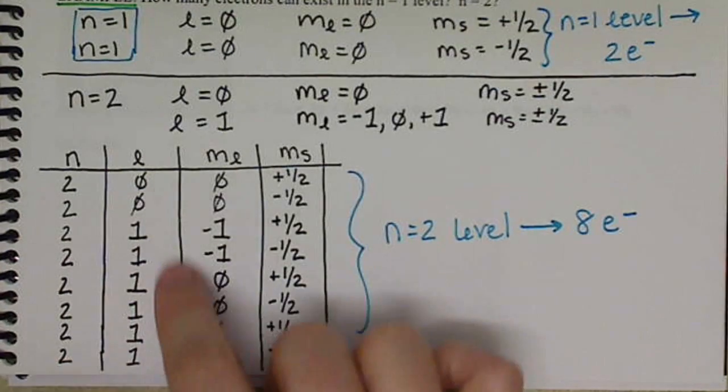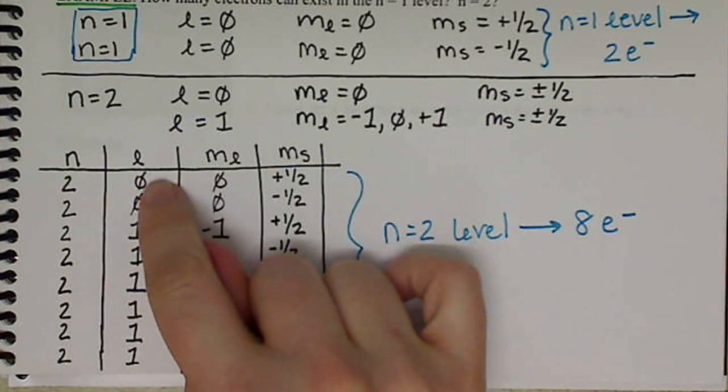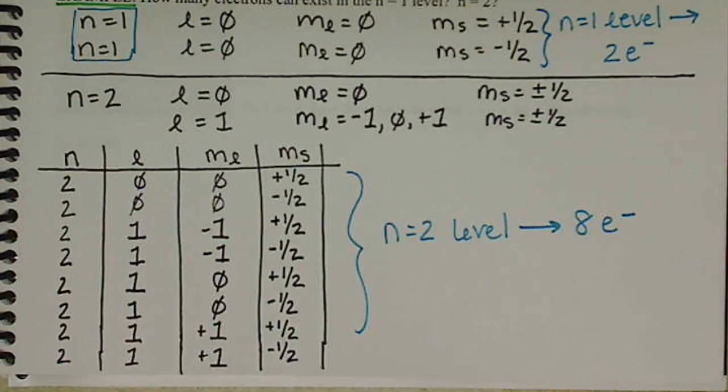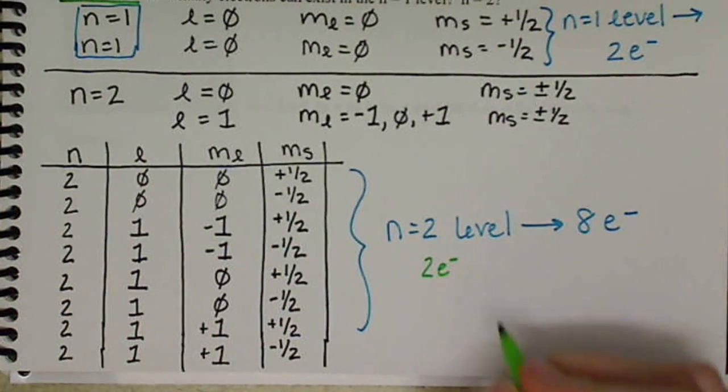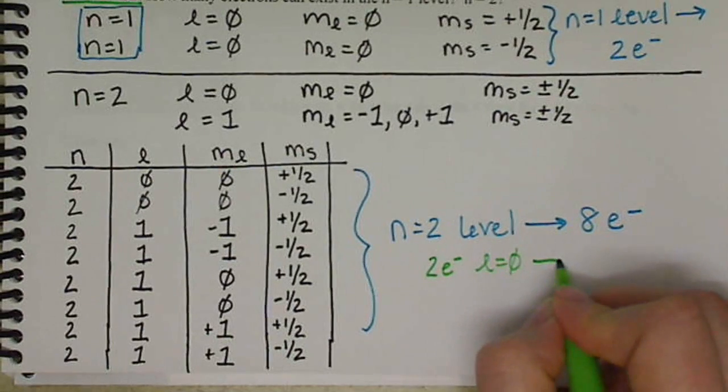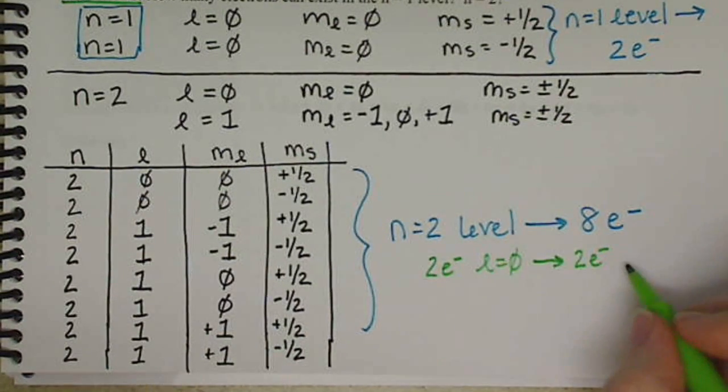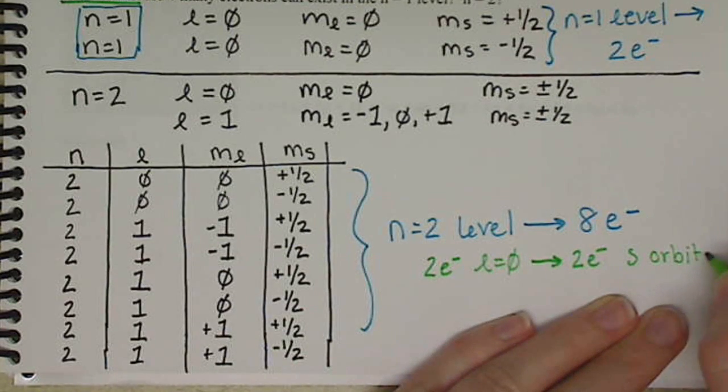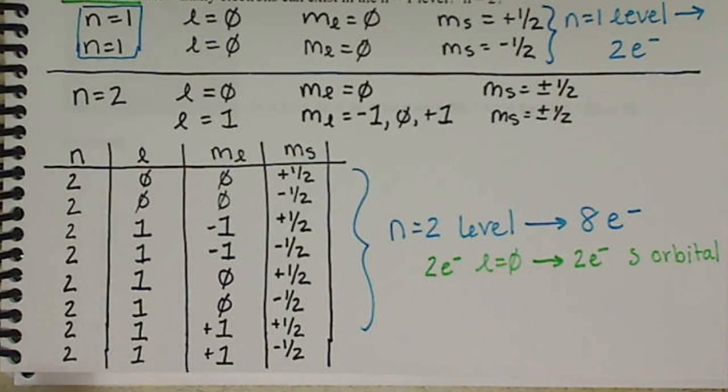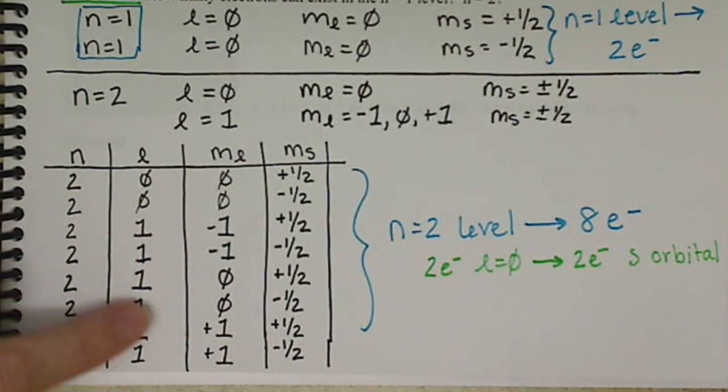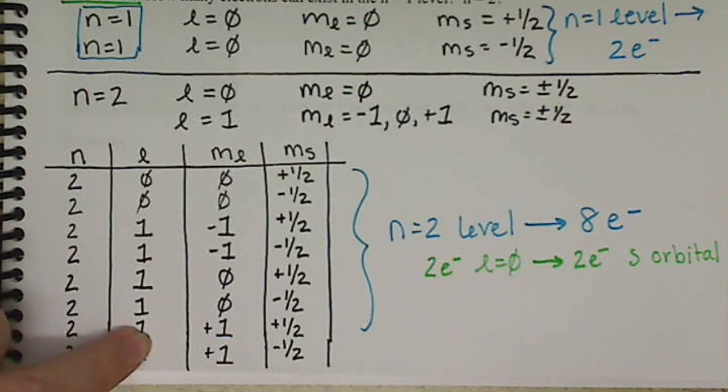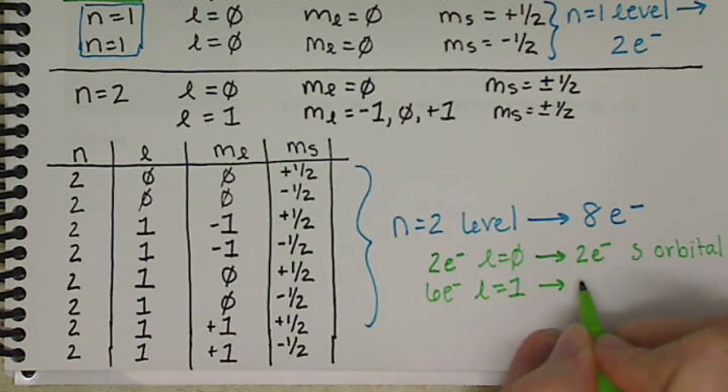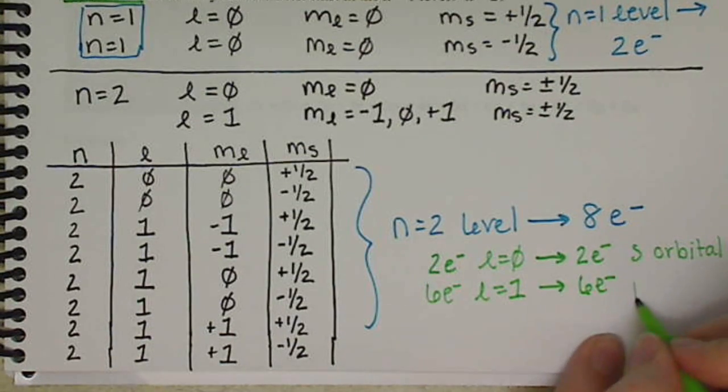Now looking further at this, we have our separation here. We have 2 electrons existing when l equals 0. So we have 2 electrons when l equals 0, which means that we have 2 electrons possible living in the s orbital. In the p orbital, we have 2, 4, 6 electrons living in the l equals 1, which means we have 6 electrons in the p orbitals.